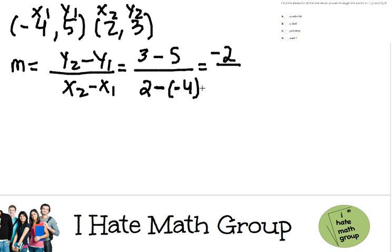Negative times negative is a positive, so this becomes 2 plus 4, which equals 6. And then I need to simplify, and this is negative 1/3. Perfecto!